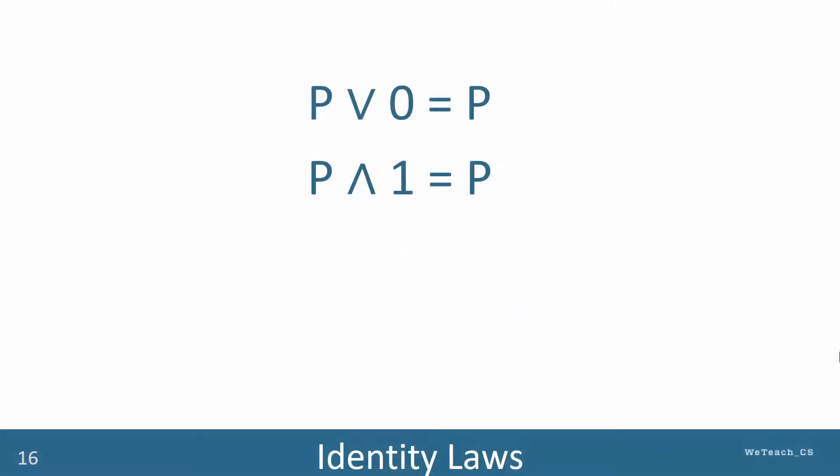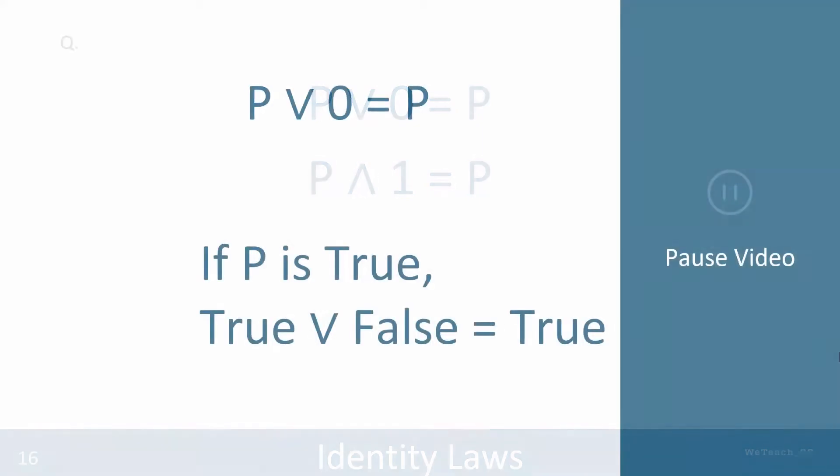The identity laws also are similar to mathematics. As in math, when you multiply an operand by 1, the value stays the same, as well as when you add by 0. In logic, when you AND an operation by true, the result is the same as the operand's original value. And when you OR an operand by false, the value remains unchanged. Study the next few slides carefully, pausing the video each time.